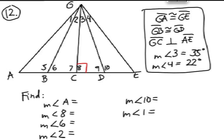GA is congruent to GE. GB is congruent to GD. GC perpendicular to AE, which is already marked. Measure of Angle 3 is 35 degrees. Measure of Angle 4 is 22 degrees.